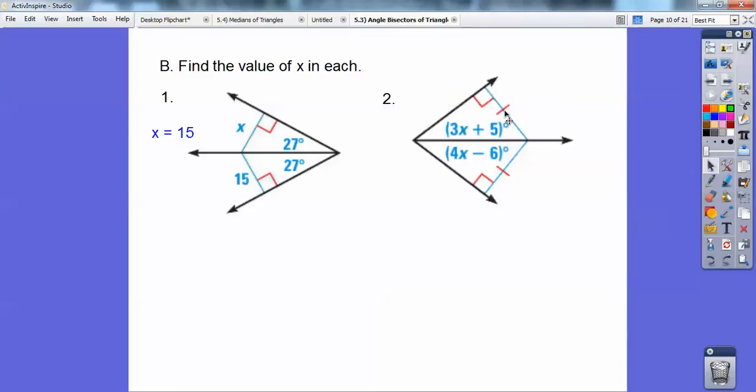Now these segments right here tell me that they're equidistant to the sides, so that means that this must be the angle bisector right here. So that means 4x minus 6 equals 3x plus 5. You set those guys equal and you get x equals 11.